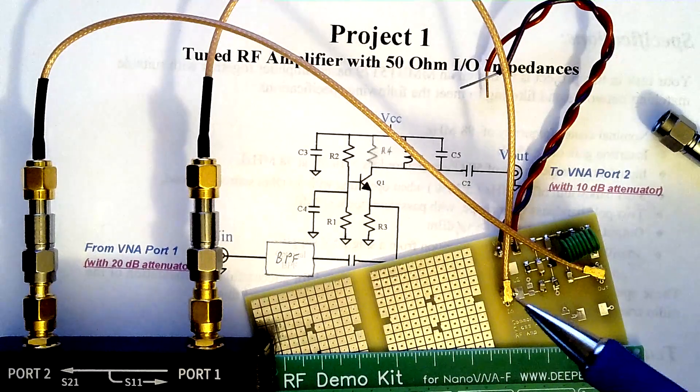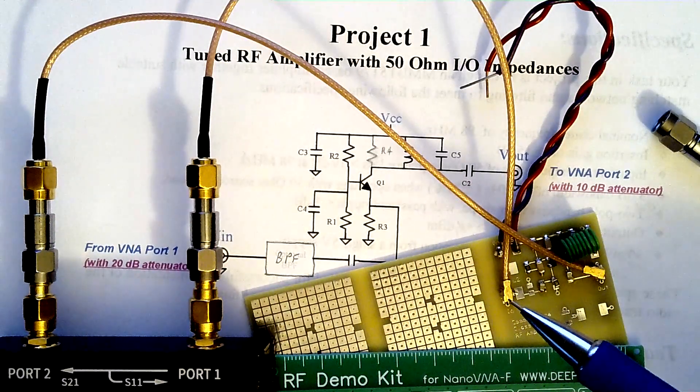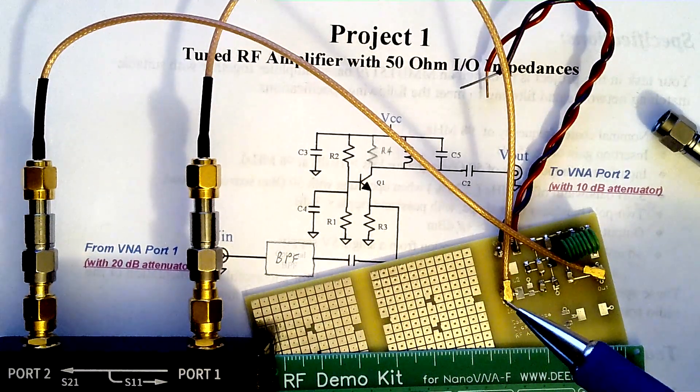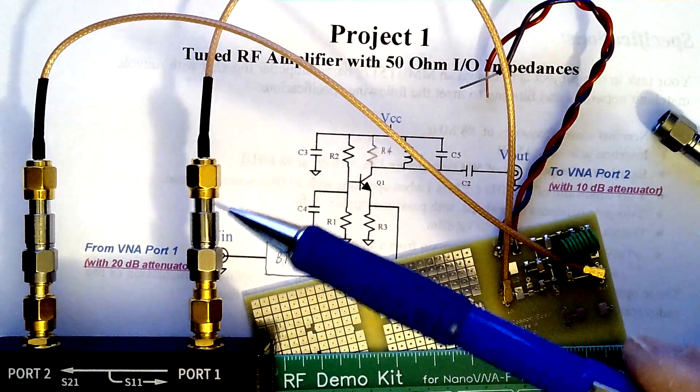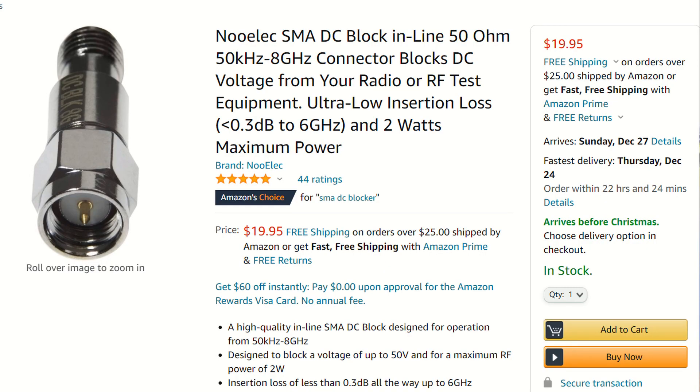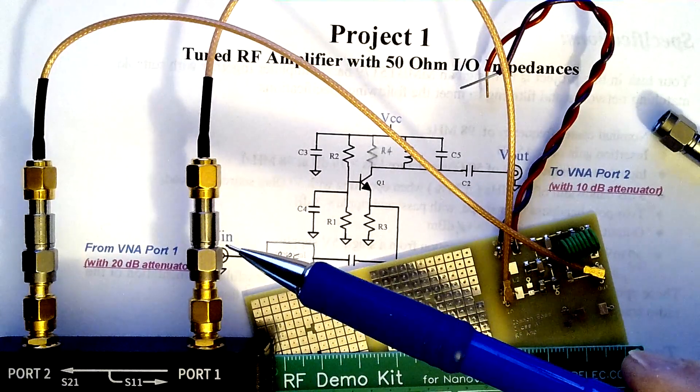In addition to that, if you plan to mess with any of this kind of stuff, I would highly recommend that you maybe get some DC blocks for the input of the Nano VNA, as well as the attenuator.